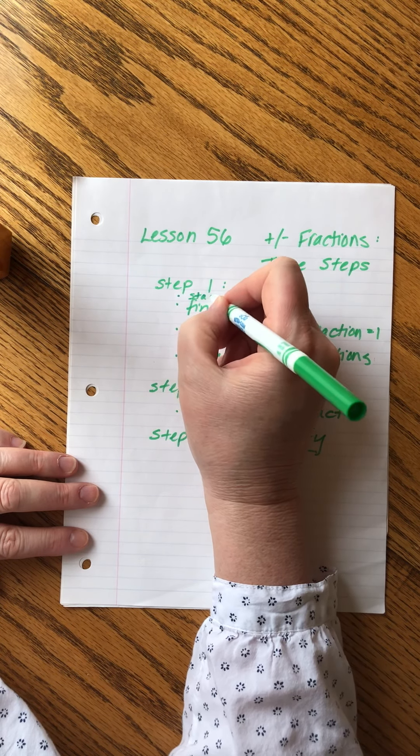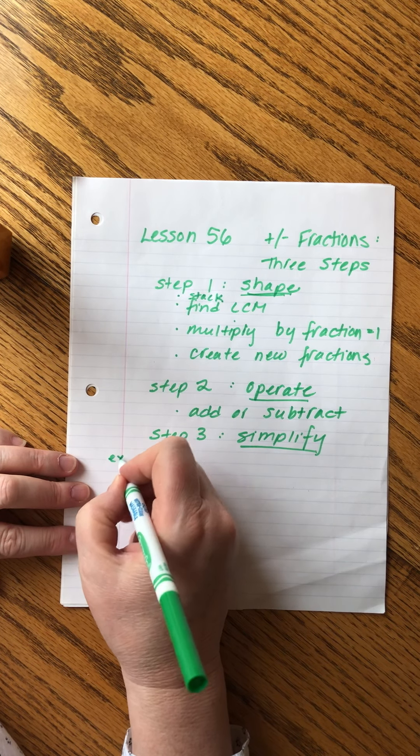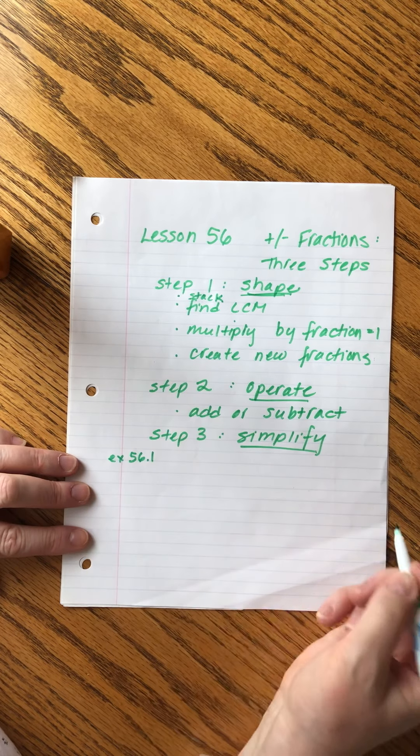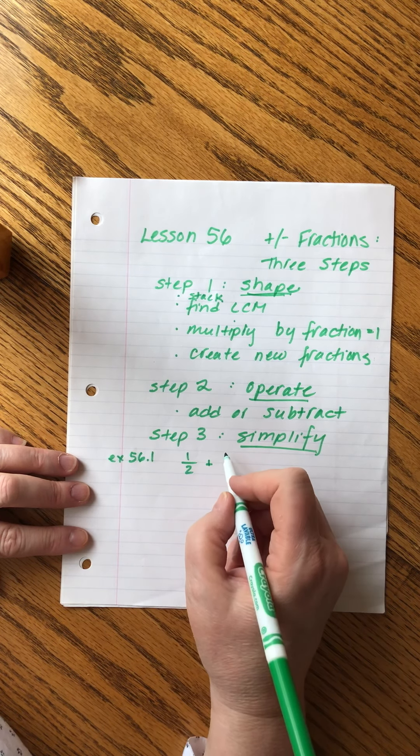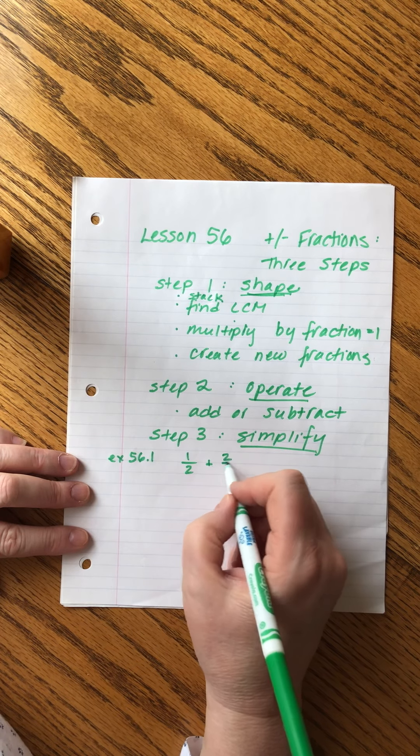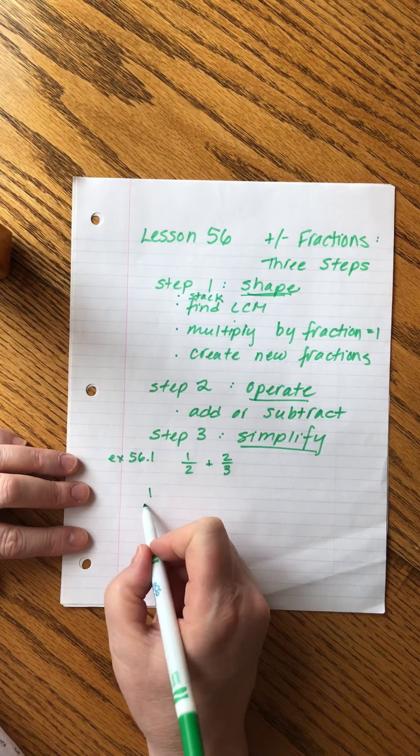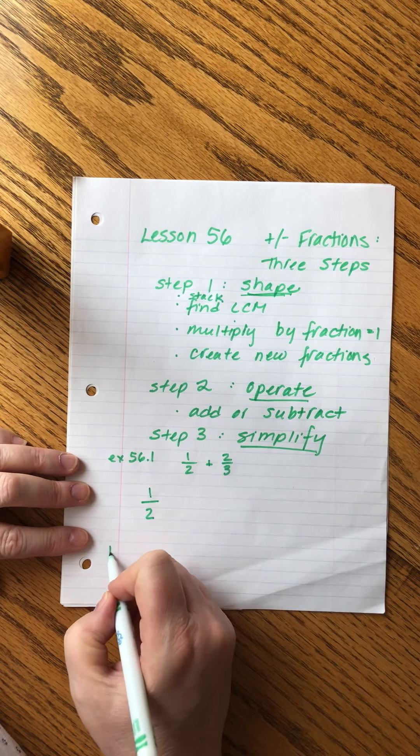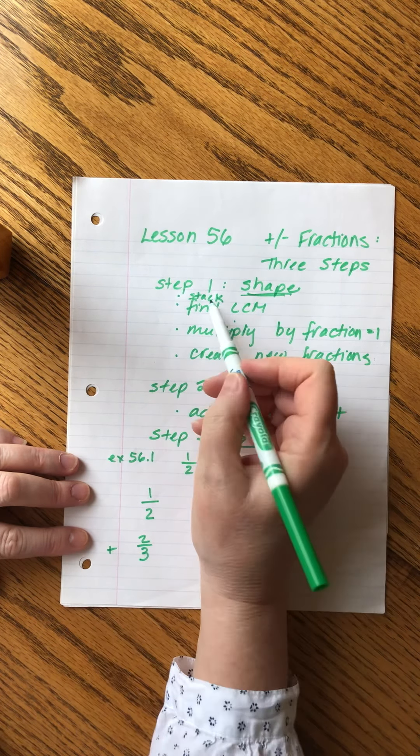And we'll just talk about how shaping, operating, and simplifying are the three steps for that. Shaping also includes making sure that we stack the problem. So here's an example, 56.1. John gives us the problem written like this: one half plus two thirds. Okay, so the first thing we're going to do is shape. The first part of shaping is to stack. Stack it. Okay, there it is.